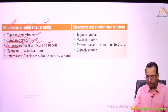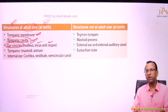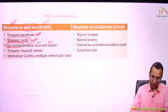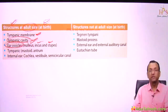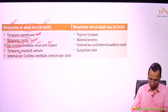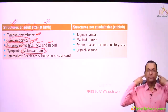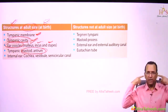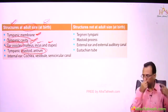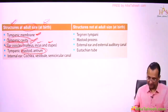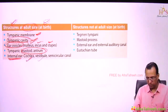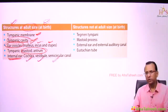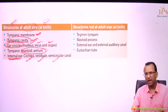Even the tympanic membrane — the lateral wall of the middle ear cavity — is adult size at birth, along with the malleus, incus, and stapes. Also, the mastoid antrum is adult size at birth. Even the internal ear — including the cochlea, vestibule, and semicircular canals — is adult size at birth. So both the middle ear and the inner ear are adult size at birth.